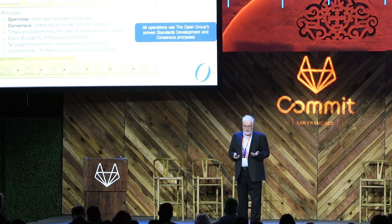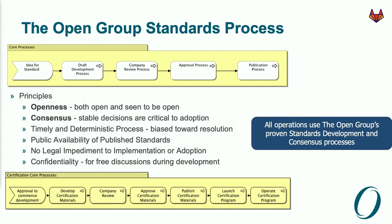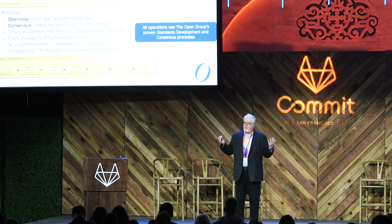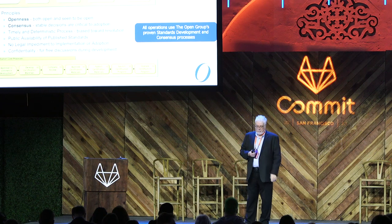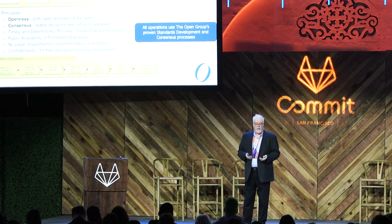So how do these standards originate? Community is vital to the Open Group. The contribution of volunteers from our member companies is the fuel of standards development. These people bring the ideas, bring the work to create the words, share their ideas, and hammer them out sometimes through interesting consensus processes. That's really the heart of where all of these standards come from — they don't just come from above. People like you come together and build them, not unlike how you might come together and build code.